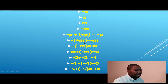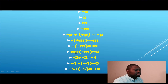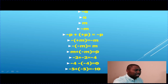The opposite of negative M equals positive M. We can say minus times minus M equals plus M. And M plus negative M, which is the same as M minus M, equals zero.